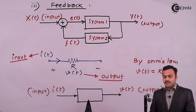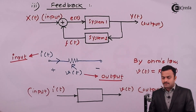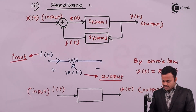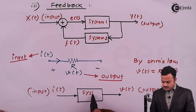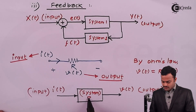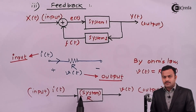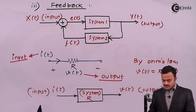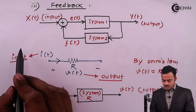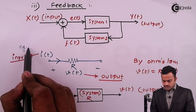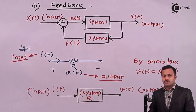So what is happening here is that the input current I is getting multiplied by R. This particular block we call as a system — it will have some constant or function associated with it so that once current is passed, a multiplication happens and we get the output voltage V. This is a simple example to elaborate how a system works. Thank you.